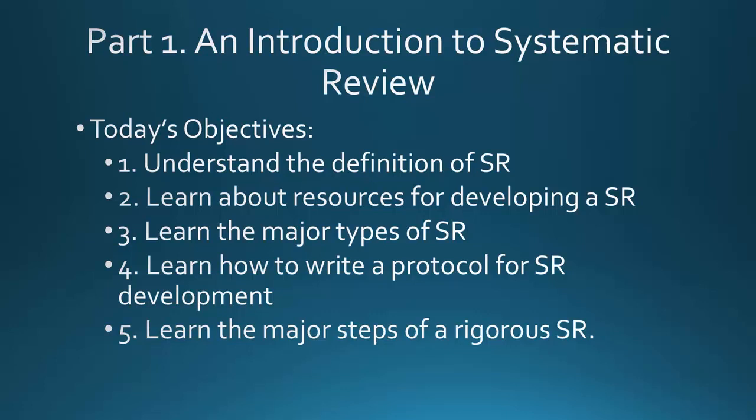For today, we're going to cover: what really is a systematic review, why you want to write one — and you all really do want to write one — the major types of systematic review, how to write a protocol or plan for your systematic review, and what the steps are in the systematic review process. It's a pretty detailed process, so you can anticipate about six months. If you're thinking about writing a systematic review, don't think you're going to write it in a month — that's just not realistic.